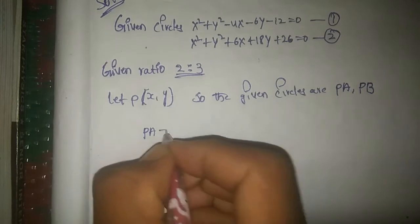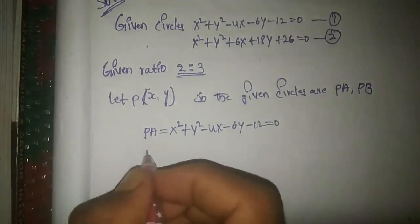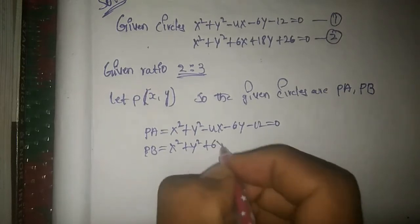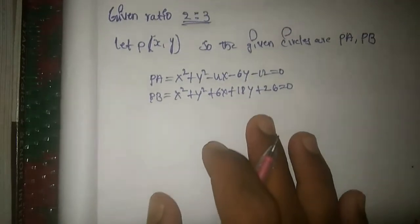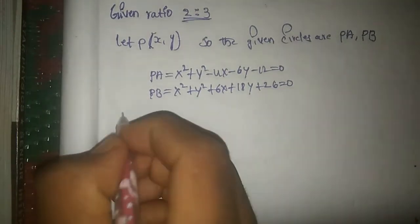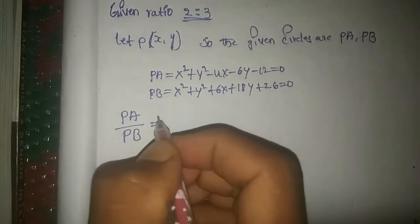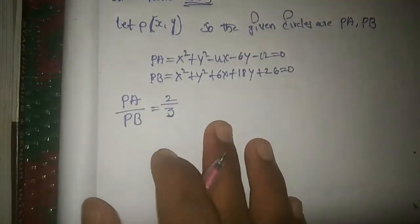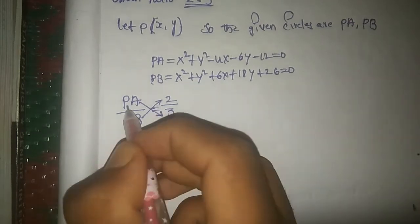The first circle PA value uses x² + y² - 4x - 6y - 12 = 0, and the second circle PB value uses x² + y² + 6x + 18y + 26 = 0. The ratio PA to PB = 2:3, which we convert to PA/PB = 2/3.